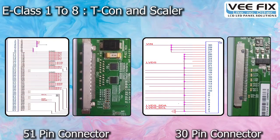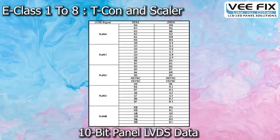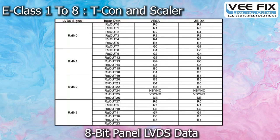Then we come to the LVDS connector. There are two types of LVDS connectors — with 51 pins or 30 pins. In this LVDS connector, there are panel supply pins, ground pins, and LVDS data pins. There are different types of LVDS data pairs like 5-pair signals and 10-pair signals. In these pairs, RGB data and horizontal sync and vertical syncs are coming as per the ZA format, VESA format, 10-bit panel format, or 8-bit panel format.